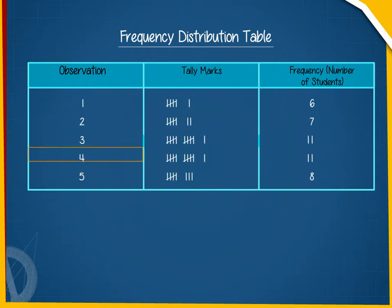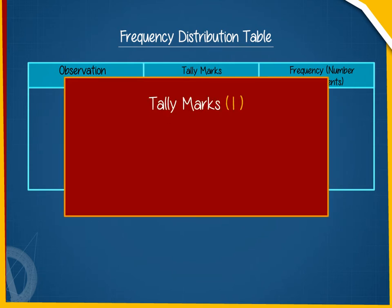We read the raw data one by one and put the tally mark against the appropriate observation. When there are already four tally marks and we have to enter the fifth tally mark against the same observation, it is entered as a cross line cutting all the four tally marks diagonally. That is, and is counted as five.